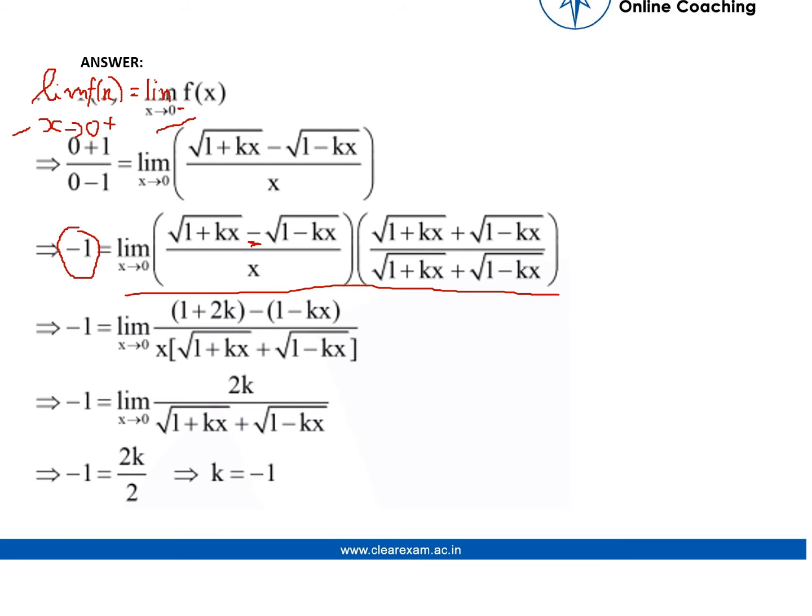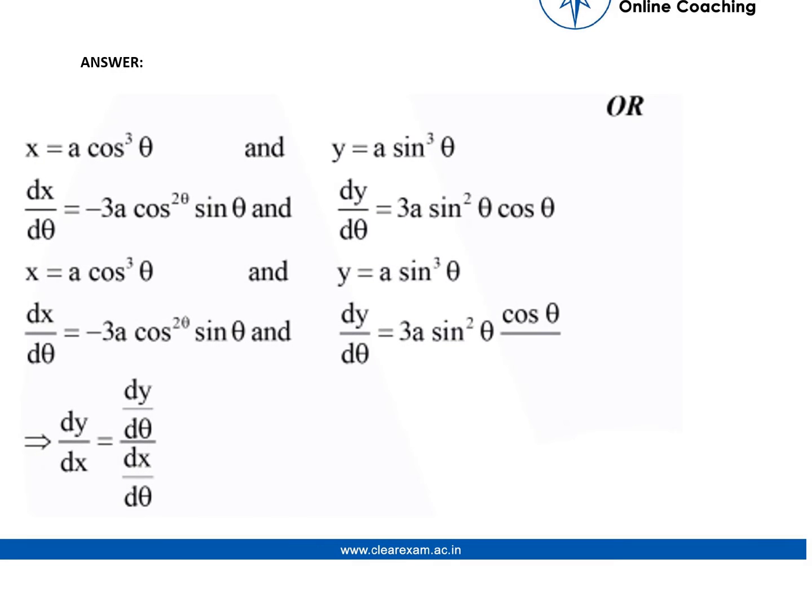Upon simplification, okay there is one mistake, it's not 2k, it's kx. Now upon more simplification we will be getting this. Now we will be placing x tending to 0, and after doing it we will be getting k equals to minus 1.